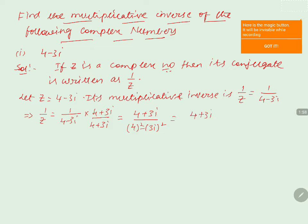That equals 4 plus 3i by 4 square is 16 minus 3 square is 9 into i square. So that can be written as 4 plus 3i by, the denominator part is 16 minus 9 into minus 1, which becomes plus 9.